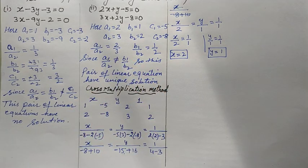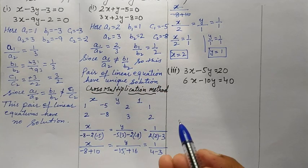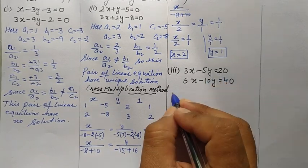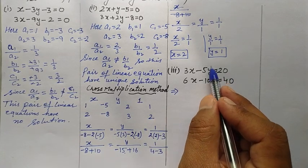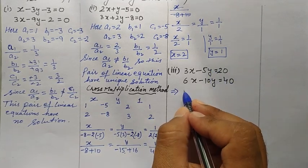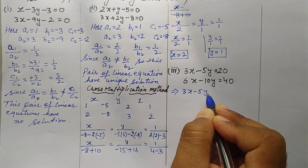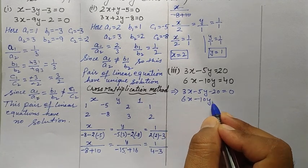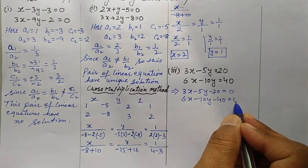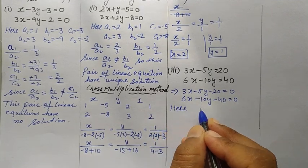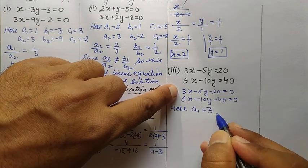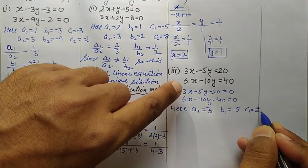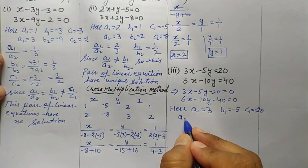For Part 3, we bring the constants to the left-hand side to get the standard form: 3x − 5y − 20 = 0 and 6x − 10y − 40 = 0. So a1 = 3, b1 = −5, c1 = −20, and a2 = 6, b2 = −10, c2 = −40.